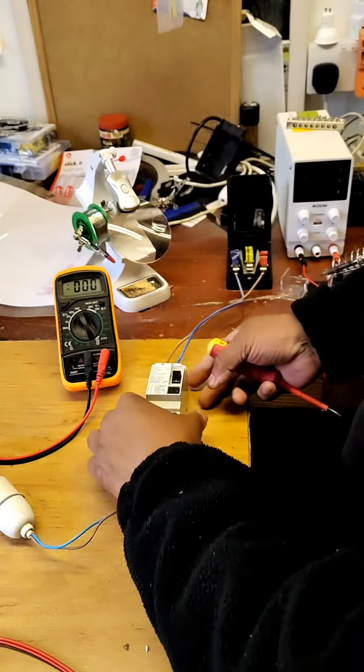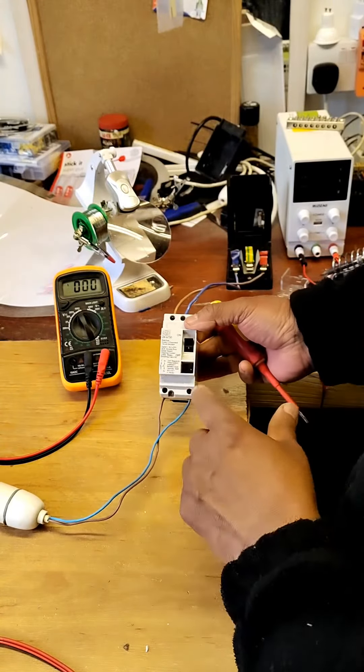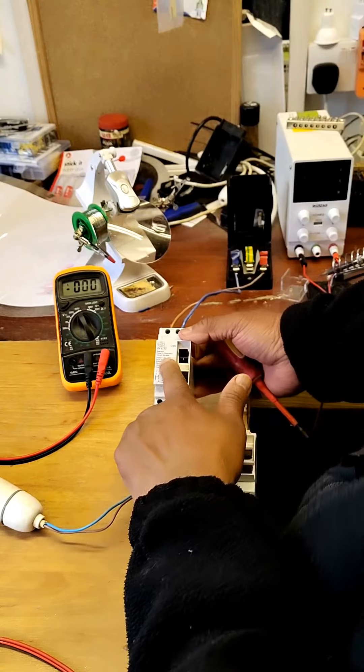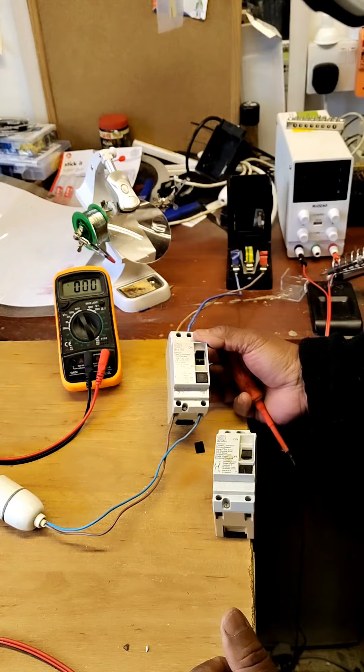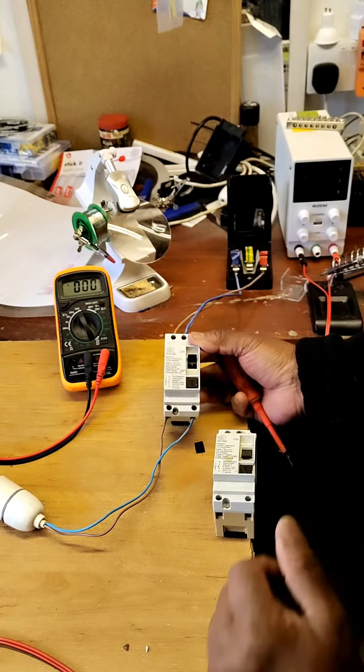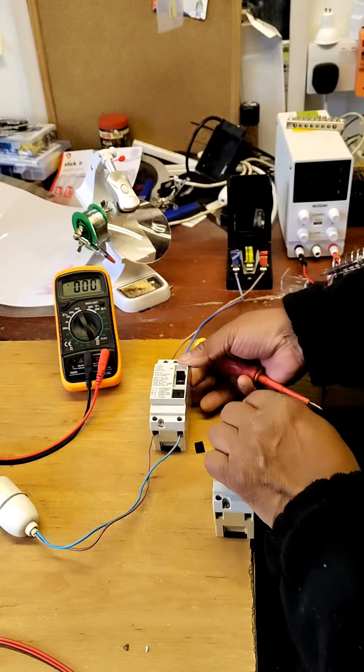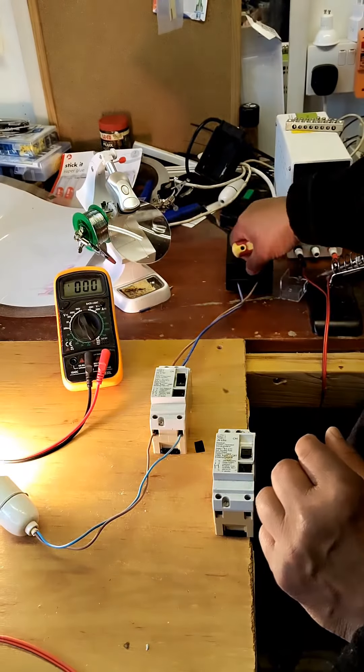And when you test it, you make sure it operates under 30 milliamps. And once this goes over more than 30, it's going to trip. So this is what you call a safety device.